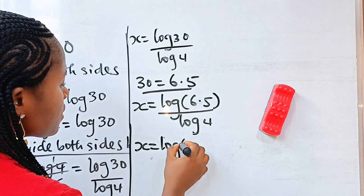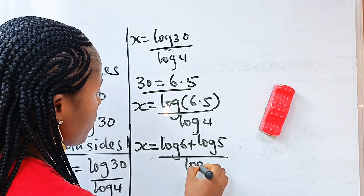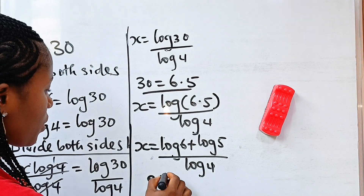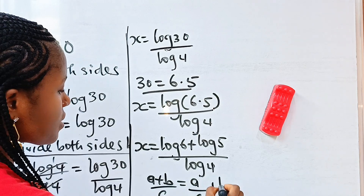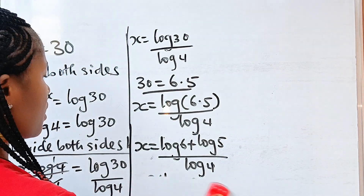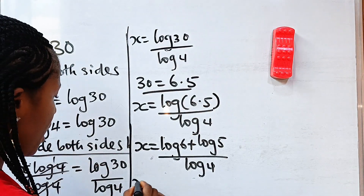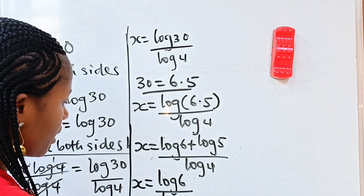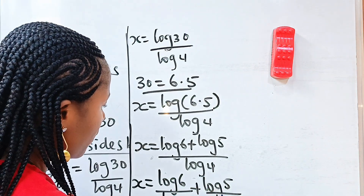So we can write x as equal to (log 6 plus log 5) divided by log 4. Now, when you have (a + b) divided by c, this equals a/c plus b/c, so x equals log6/log4 plus log5/log4.